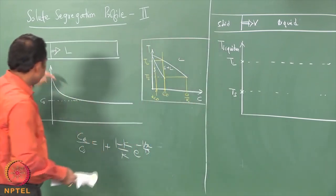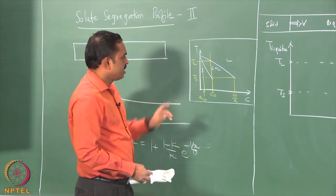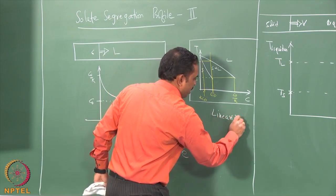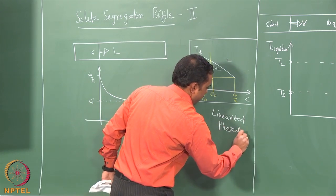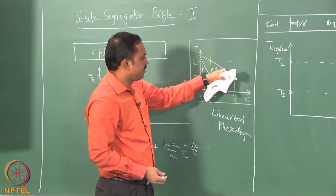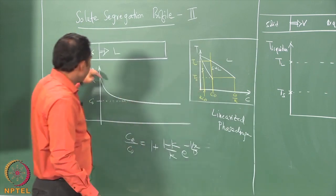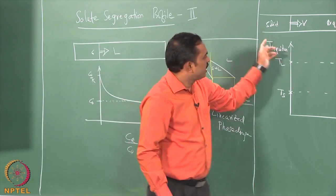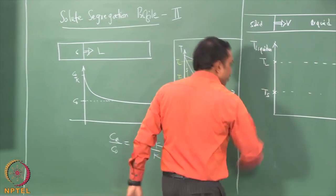The variation is exponentially decaying for the composition, and if we assume a linearized phase diagram — meaning the liquidus and solidus lines are straight lines — then this compositional profile, which is exponential, will be mapped onto the liquidus temperature profile as also exponential. So the liquidus temperature profile is going to look like an exponential decay.